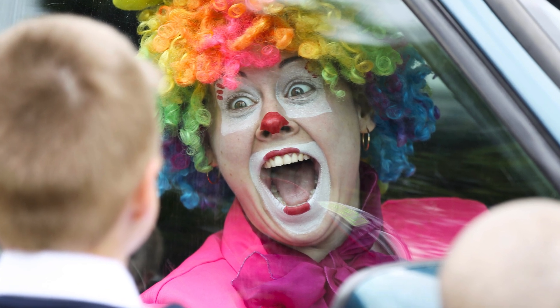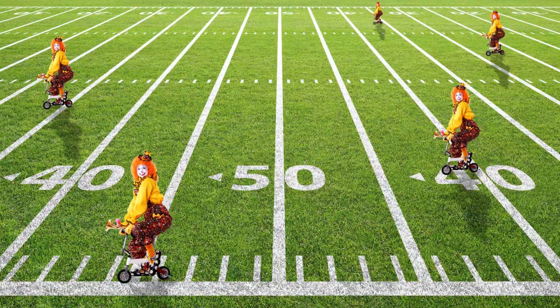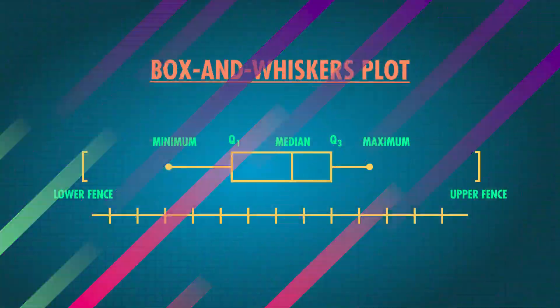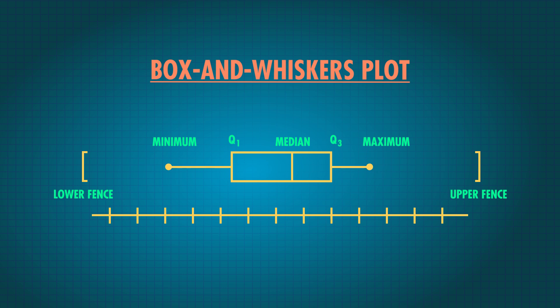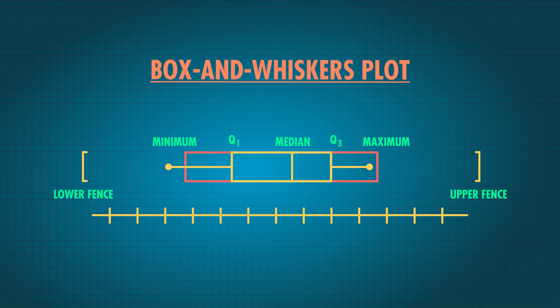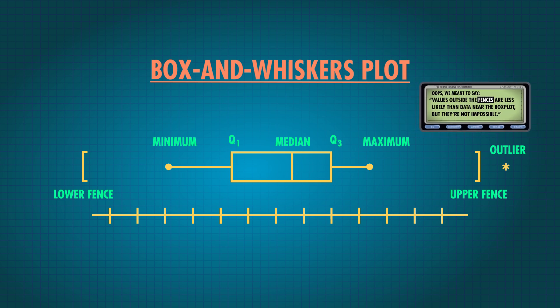Imagine the difference between fitting 20 clowns in a car and fitting 20 clowns in a regulation-sized football field — same number of clowns, more space to make balloon animals. Attached to either end of the box are the whiskers, which show the minimum and maximum of all the data, as long as it's within one and a half times the interquartile range of the median. This value sets our fences. We use one and a half times the IQR because most data will be within this range, especially if your data is normally distributed. Most of the data will be inside the fences, and any data outside is flagged as a potential outlier.